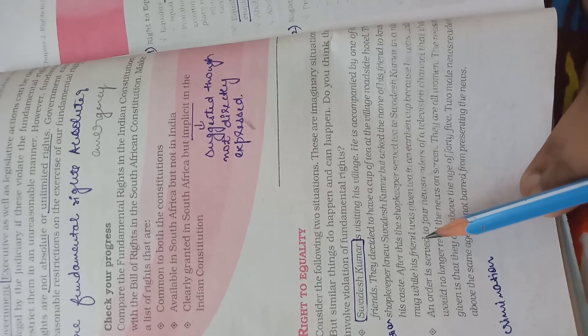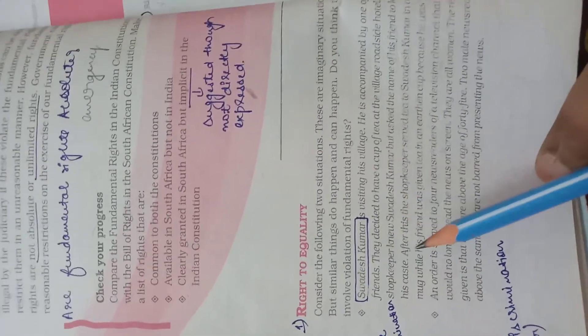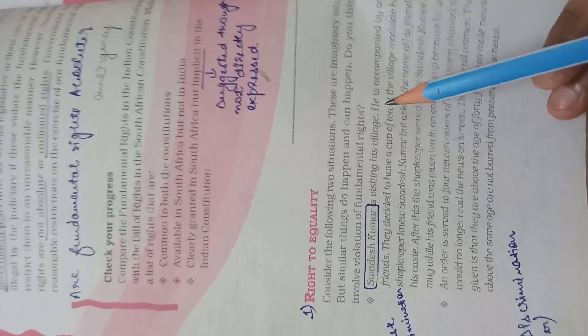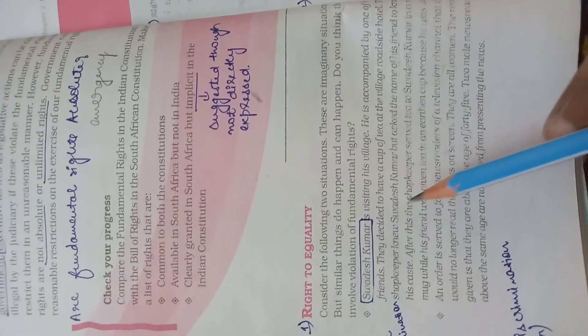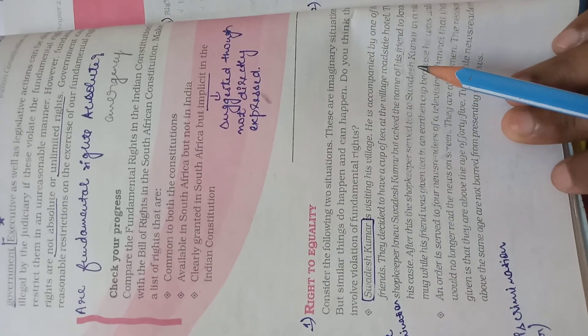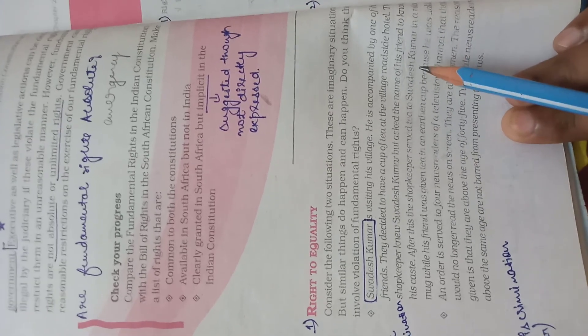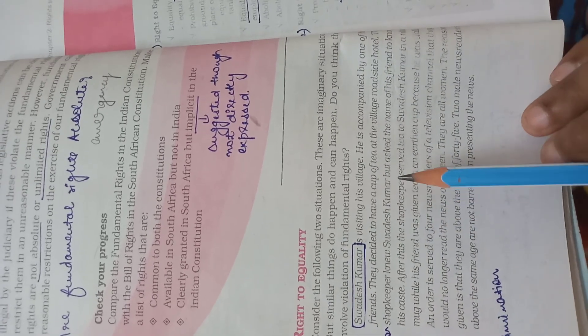After knowing the name of Swadesh Kumar's friend, the shopkeeper realized that he belongs to a Dalit class. Dalit class is basically your scheduled caste or we can say backward class in general. So he did a different kind of thing: to Swadesh Kumar he gave a nice mug, but to his friend he gave an earthen pot.